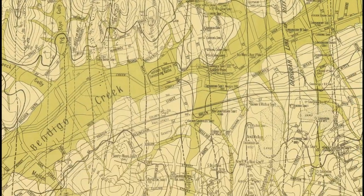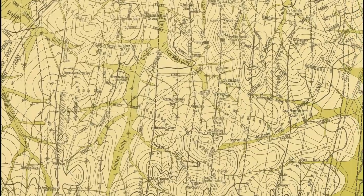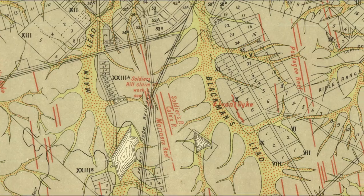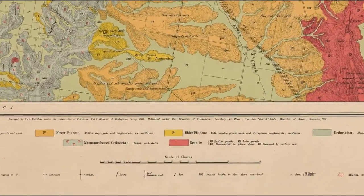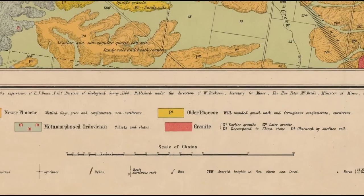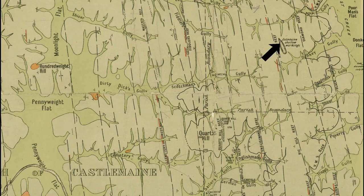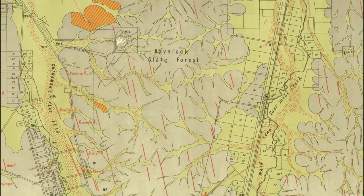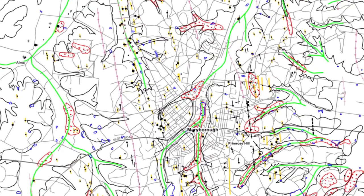Historical gold maps provide insights into the geological features and gold mining operations of the past, helping prospectors to determine ideal locations to search for gold. If you're just starting out and are seeing some of the terms and features displayed on these maps for the first time, things can get a little confusing. Today we're going to take a look at some of these features, what they mean and what they look like, so you can have a better understanding of these old gold maps. You will find many of these features displayed on modern gold maps as well.